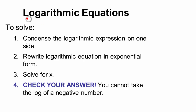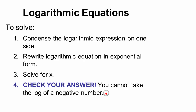When the unknown is in the logarithmic expression, we solve logarithmic equations. Step 1: condense the logarithmic expressions on one side — sums become products, differences become quotients. Step 2: rewrite the logarithmic equation in exponential form. Step 3: solve for x. Step 4 — most importantly — check your answer, because you cannot take the log of a negative number. The domain of the logarithmic function is x strictly greater than 0.